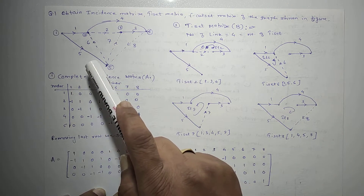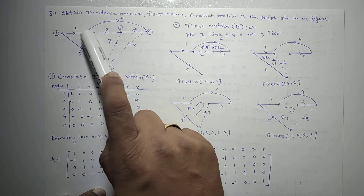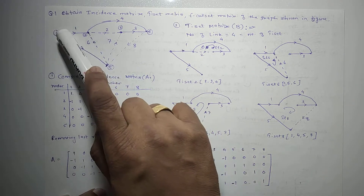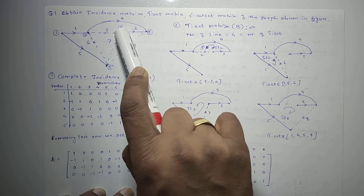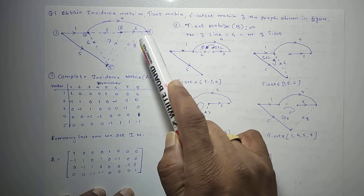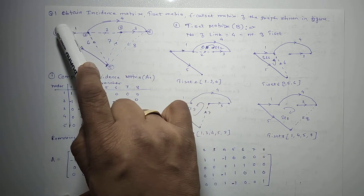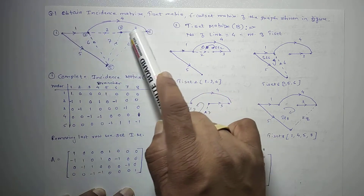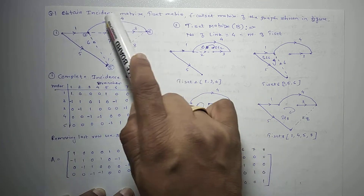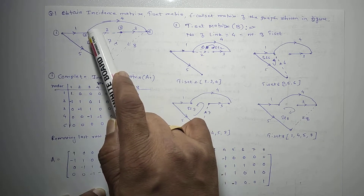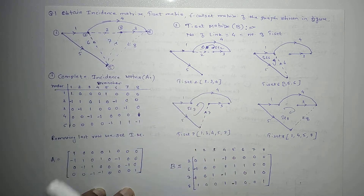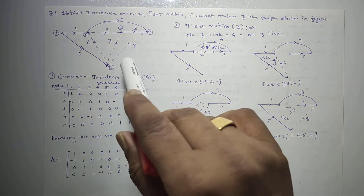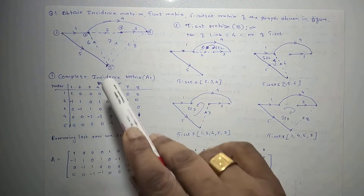In this graph, the solid lines represent twigs. These twigs together are called a tree — they are the branches of the tree. The solid line graph represents the tree, and the dotted lines represent links.